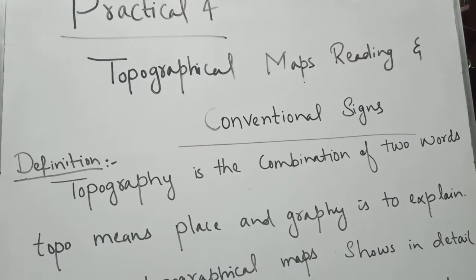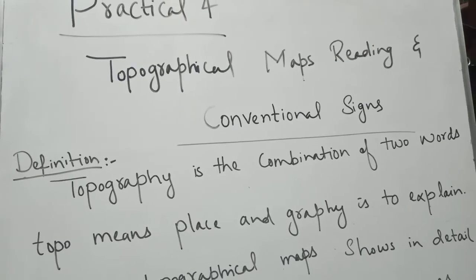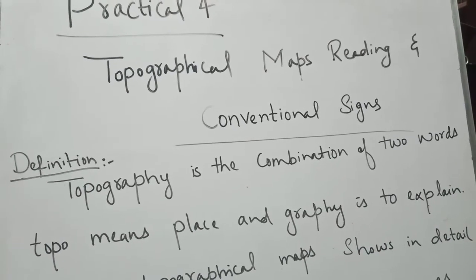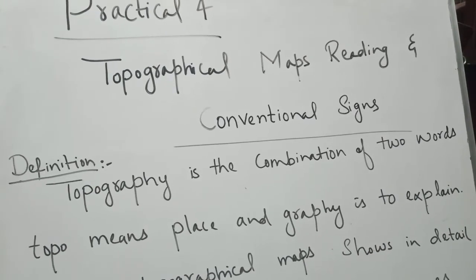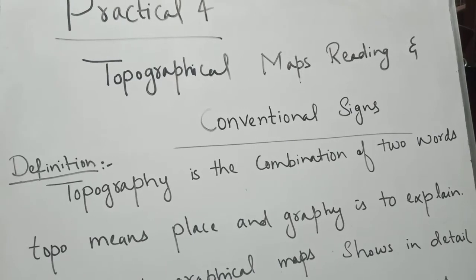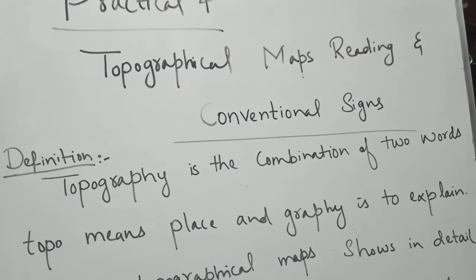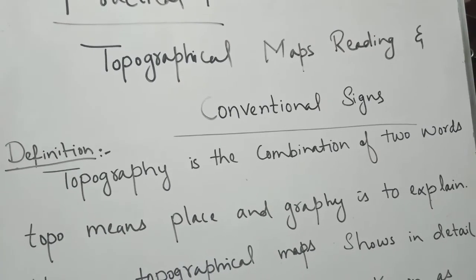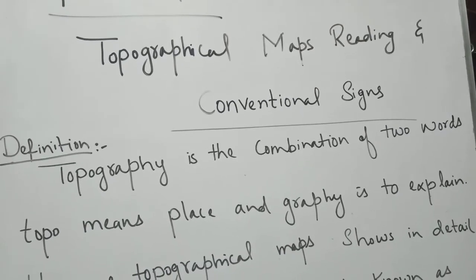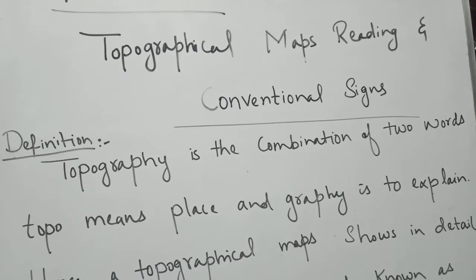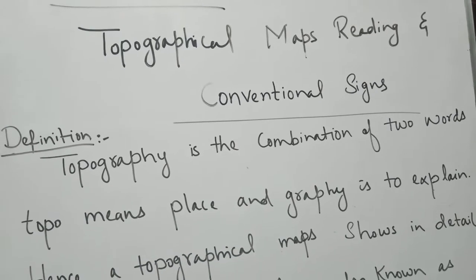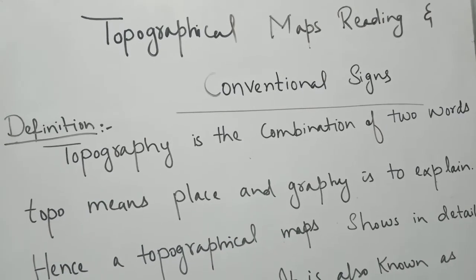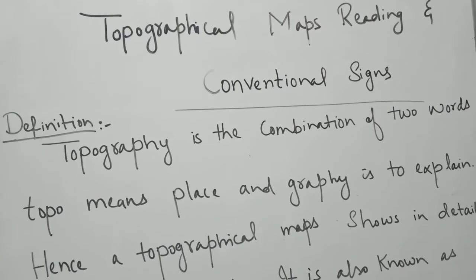If you remember, the previous practical — practical number 3 — was related to conventional sign, so I had decided to make a sequence of conventional sign with respect to practical 4. In practical 4, our main objective and target is to understand what topographical maps are, how we can easily study them, and what type of detail a topographical map normally shows.